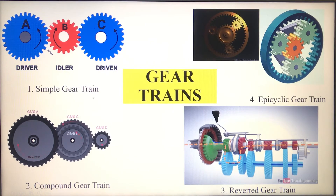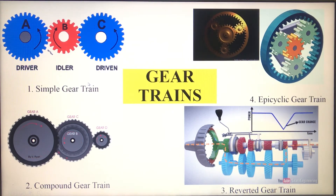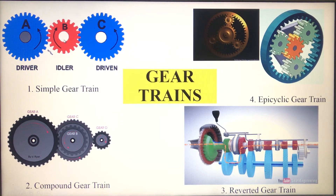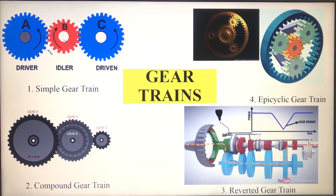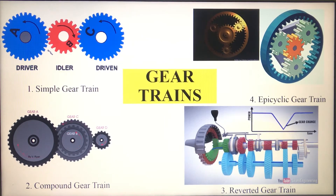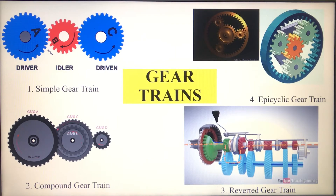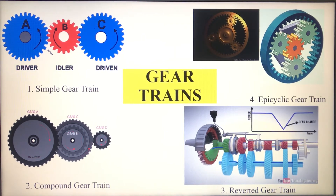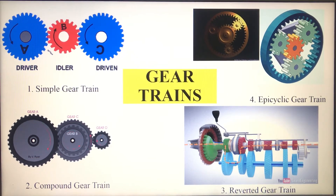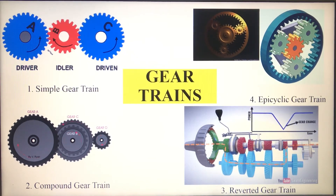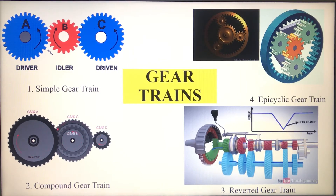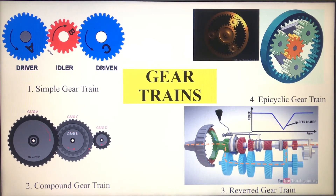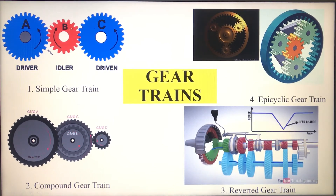In case of simple gear train, each shaft consists of only one gear. You can observe here — there are three shafts and each shaft consists of only one gear. You can increase the diameter of the gear, but if you increase the diameter to avoid the intermediate gear, it will increase the cost of the system. To design a cost-effective system, you need this intermediate gear, which is called as an idler gear.